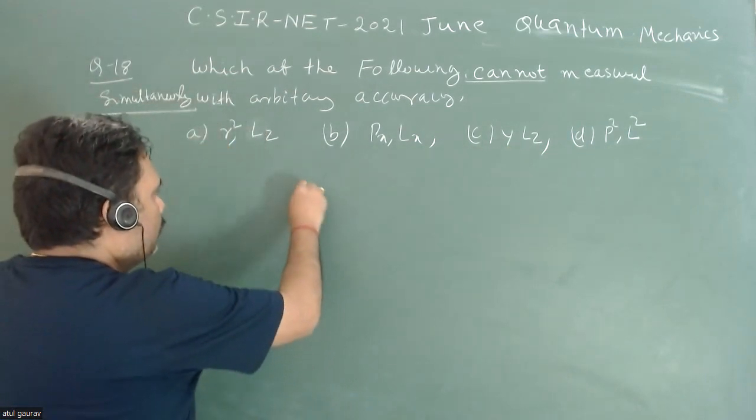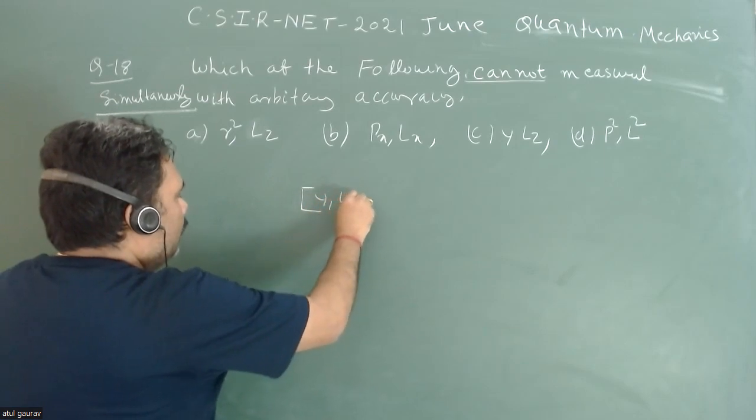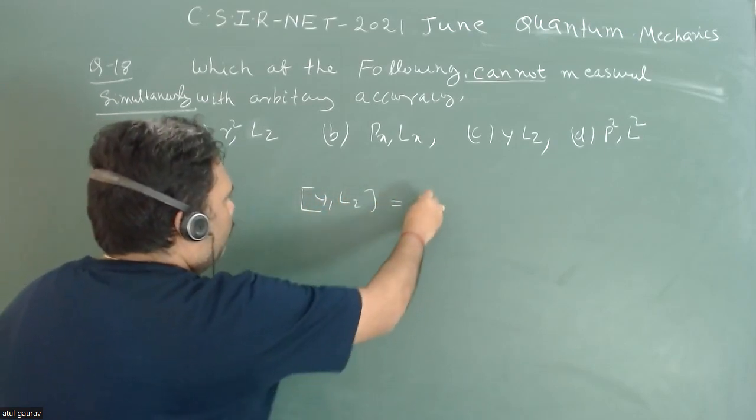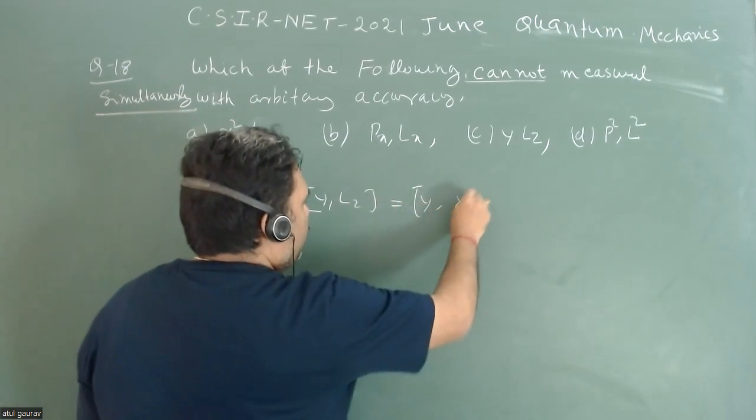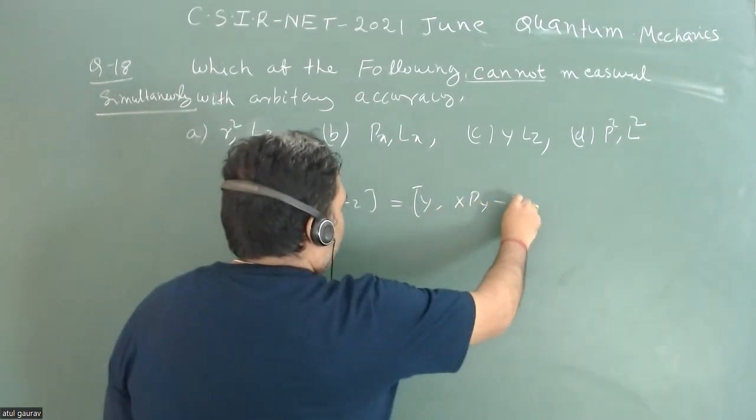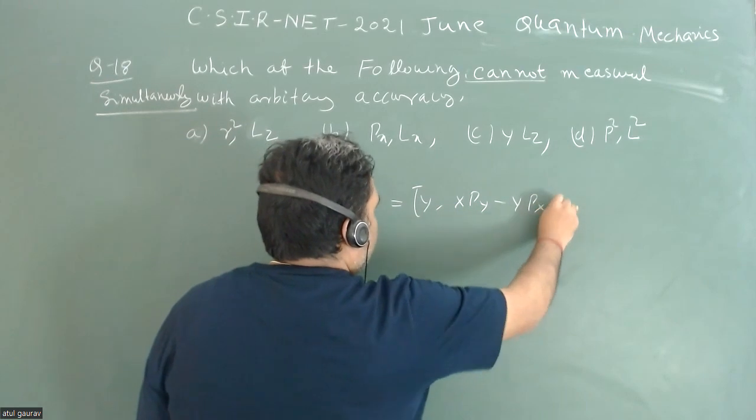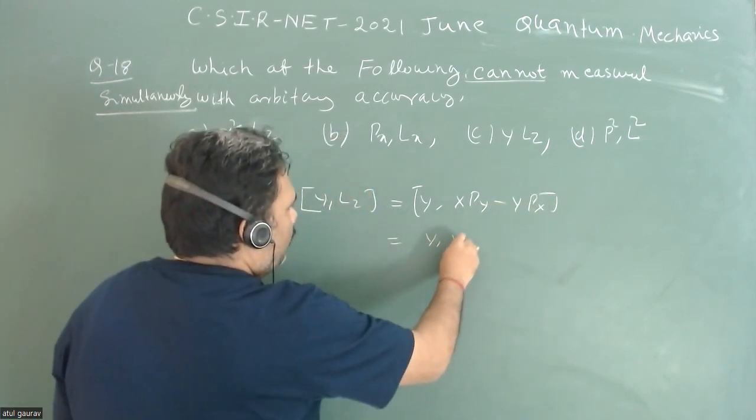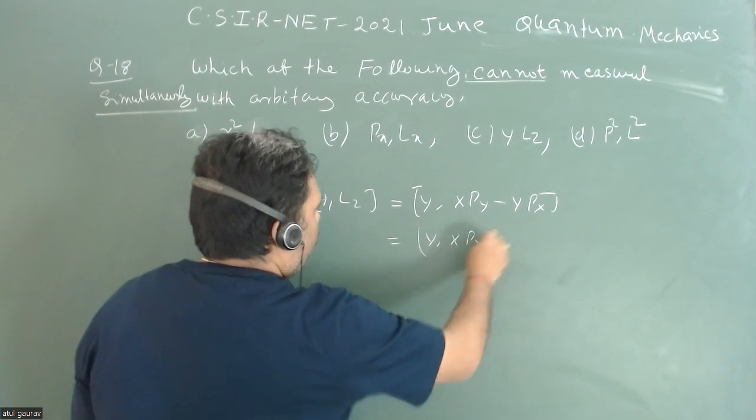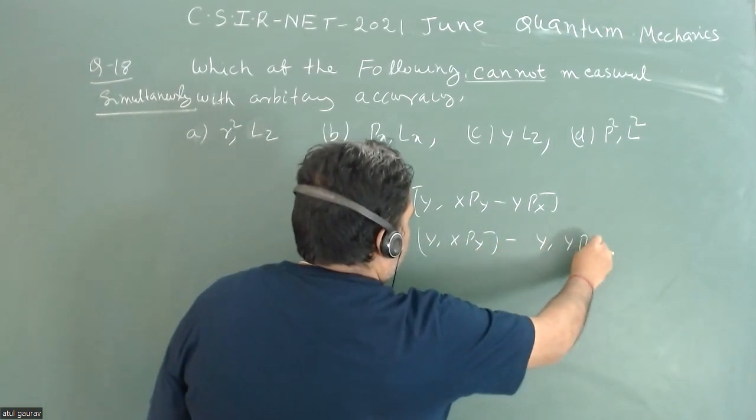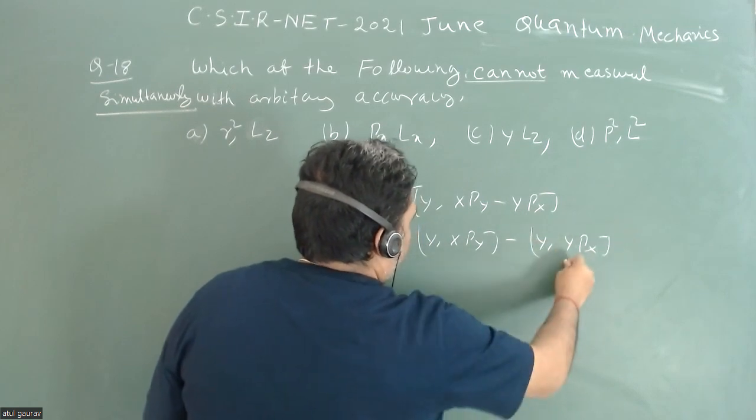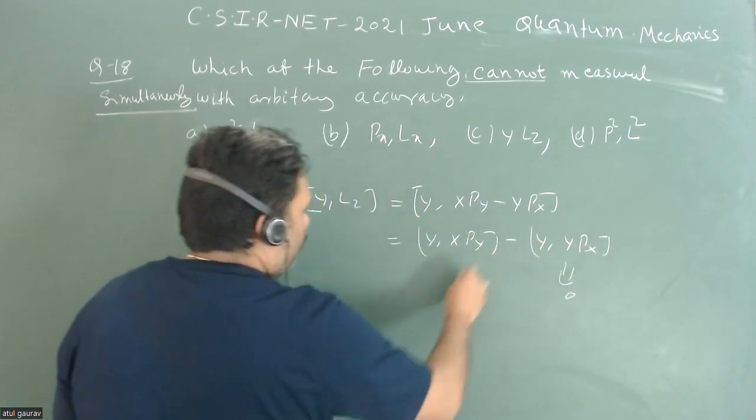We have to check the commutation between y and Lz. This can be written as y and Lz equals x Py minus y Px. Obviously this first term is going to zero.